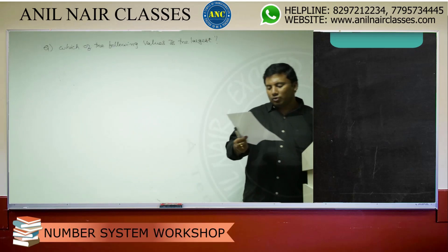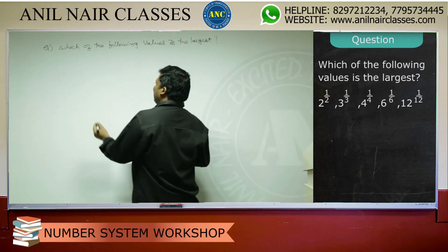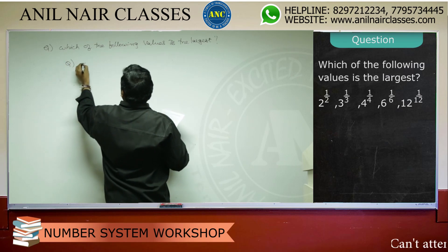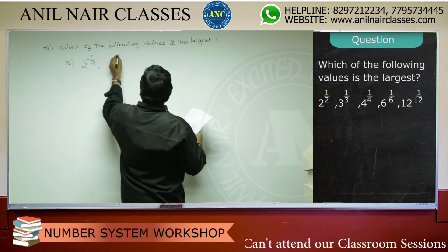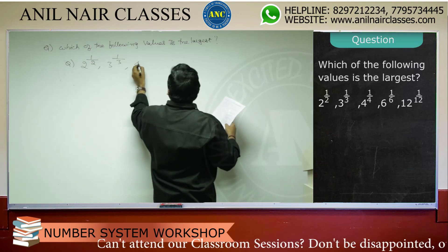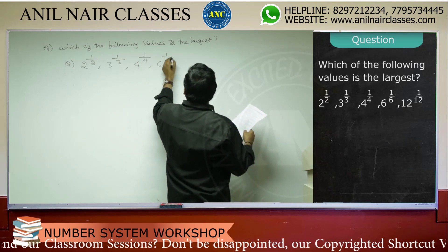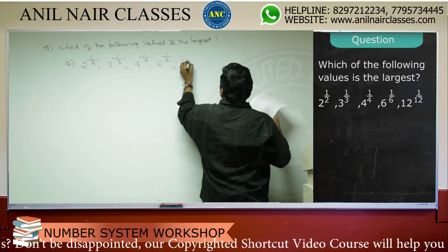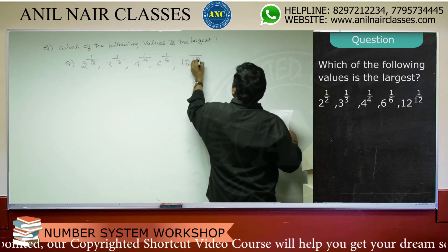Two power one by two. Three power one by three. Four power one by four. Six power one by six. Twelve power one by twelve. Which of the following is the largest?